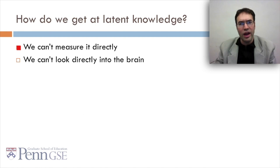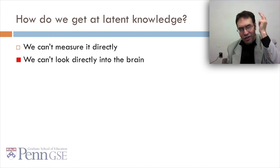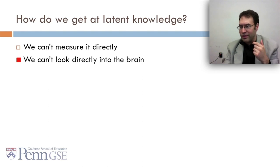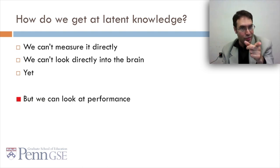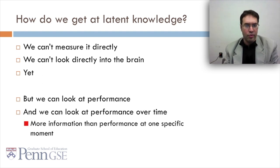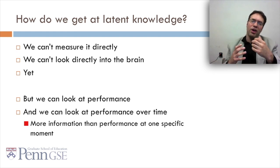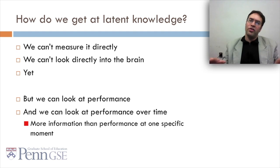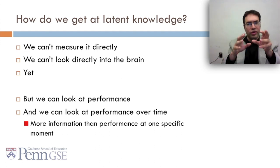So how do we get at latent knowledge? We can't measure it directly — it's latent. We can't look directly into the brain. Yet. But we can look at performance. And we can look at performance over time, which is more information than performance at one specific moment. At any one given moment, you might guess or slip. But over time, you can get a pattern and see: is the person's behavior generally consistent with them knowing it?